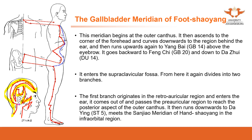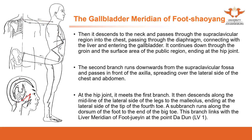There is another branch entering the supraclavicular region, which also divides into two branches. One ascends to the neck, and another descends from the neck through the supraclavicular region into the chest. Internally it passes through the diaphragm, connects with the liver and the gallbladder, then continues downward through the groin to the surface of the pubic region and enters the hip joints.